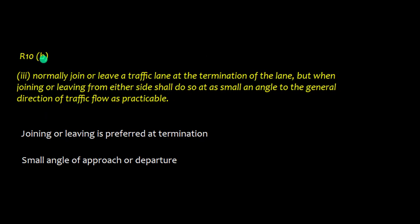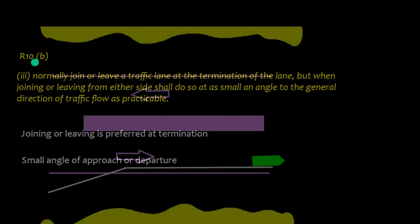Rule 10B's third part states that a vessel should normally join or leave a traffic lane at the termination of the lane. When joining or leaving from either side, it shall do so at as small an angle to the general direction of traffic flow as practicable. This small angle of approach or departure is to differentiate from a crossing vessel.